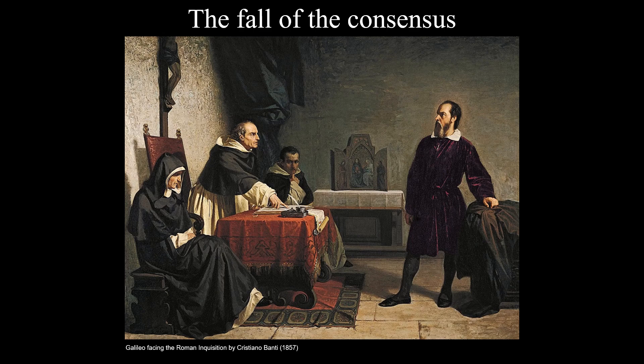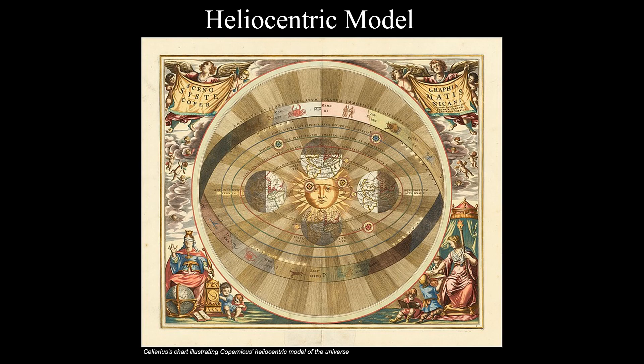Galileo ended up on house arrest for the remainder of his life because of his heretical views that the earth was not at the center of the universe — which we later found was absolutely correct. This is one of the arguments I make that consensus in science is meaningless and can sometimes hinder our progress towards the truth, because people get entrenched in the idea that they know everything. We'll come back to this when we talk about climate. The heliocentric model posits that the sun is at the center and the planets including earth orbit around it. It was later refined by Johannes Kepler, who developed the three laws of planetary motion that we still use today, and the heliocentric model is our current understanding of our solar system's motion and mass distribution.